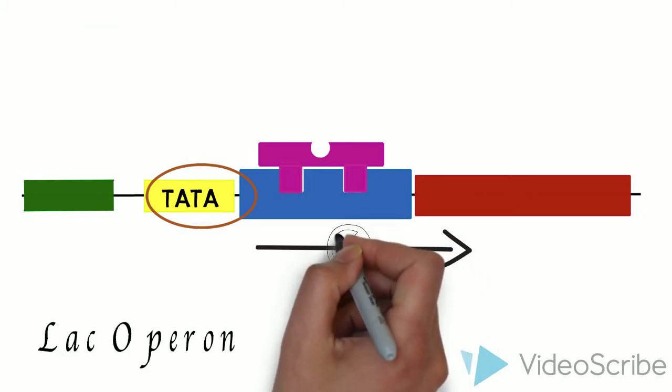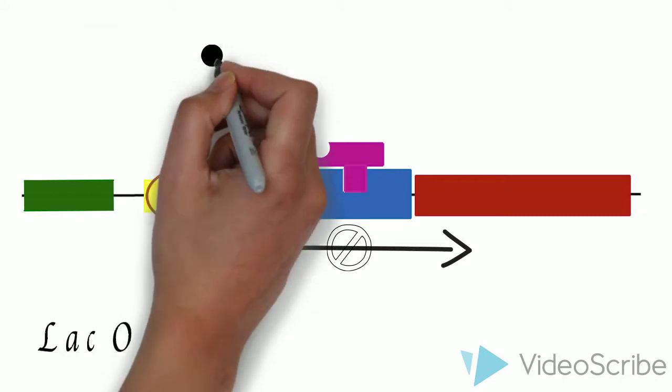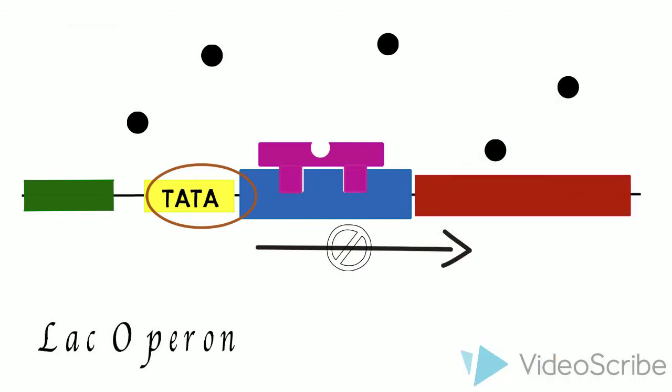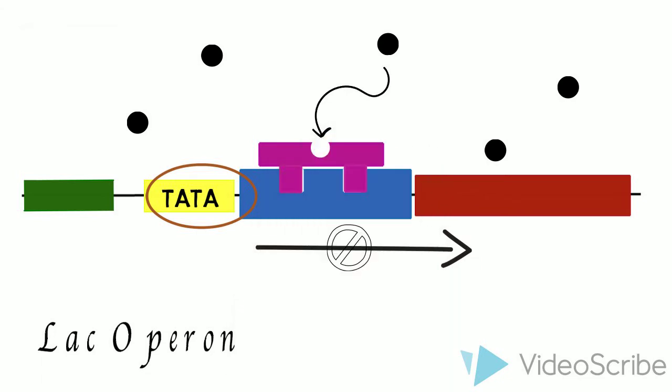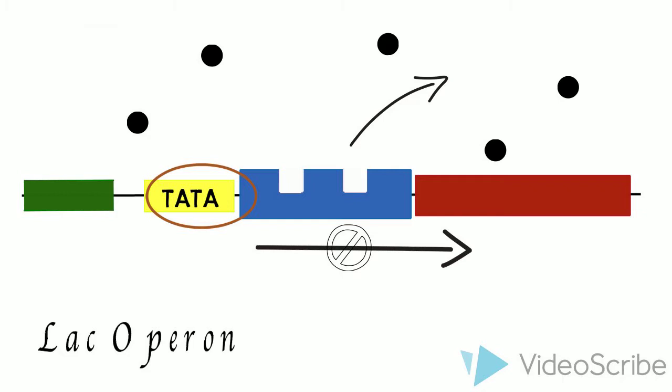So how do we get lactase? Our cells only produce it if there is lactose to be digested. If I were to drink a glass of milk, there is going to be some lactose in my stomach, represented here by these black dots. As they float around, one will eventually slip into the active site of the repressor. It binds to the repressor chemically and changes the shape of the repressor. Because of this change in shape, the repressor is no longer able to fit inside the operator, so it breaks away.